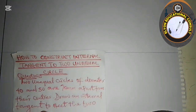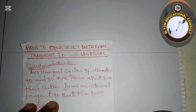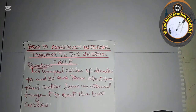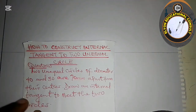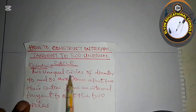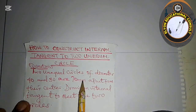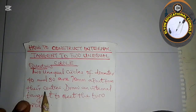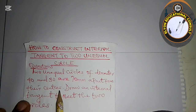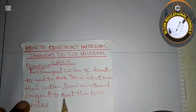In this video, we are going to be looking at how to draw internal tangents to two unequal circles. The question says: two unequal circles of diameter 40 and 30, with centers 70 mm apart — draw an internal tangent to meet the two circles.